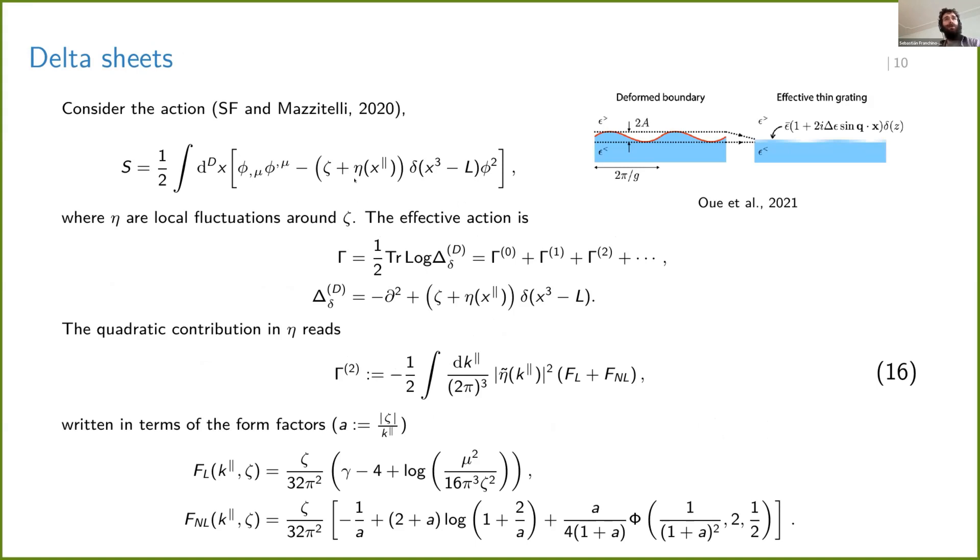And the coupling will be divided into a constant part, zeta, which will be treated to all order, non-perturbatively. And some fluctuations around that constant zeta that will be called eta and will be allowed to depend on the coordinates.